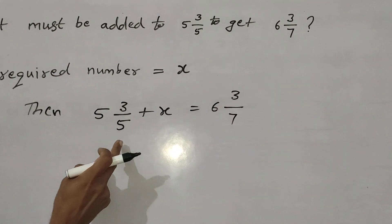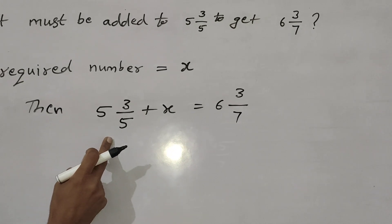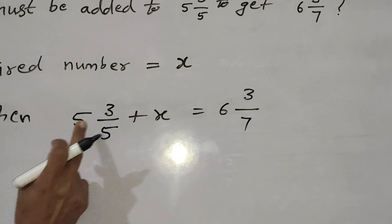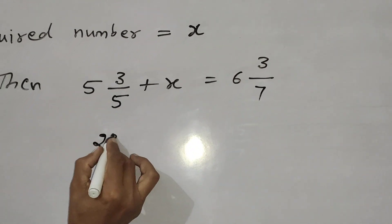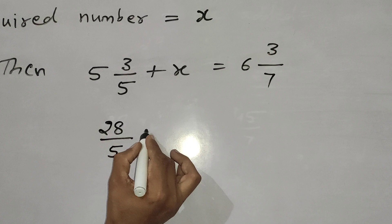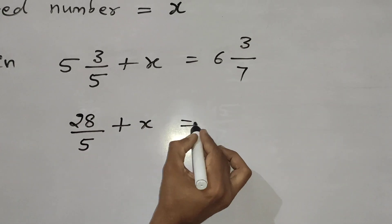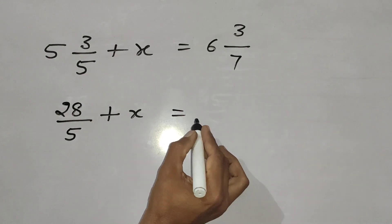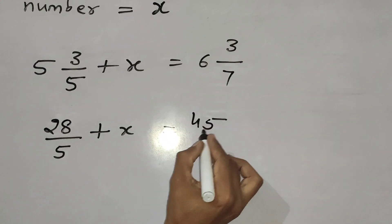Now, change this mixed fraction into improper fraction. Then, 5 into 5, 25 plus 3, 28 by 5 plus X is equal to 7, 6 out of 42 plus 3, 45 by 7.